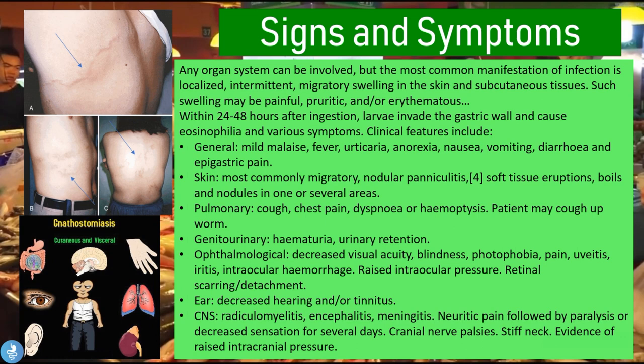In the pulmonary or respiratory system, the patient may experience cough, chest pain, dyspnea, or hemoptysis — which means coughing up fresh blood — and the patient may also cough up a worm. In the genitourinary tract, the patient may show hematuria, which is the passing of fresh blood in the urine, or urinary retention, meaning they are unable to pass urine as it stores in the bladder.